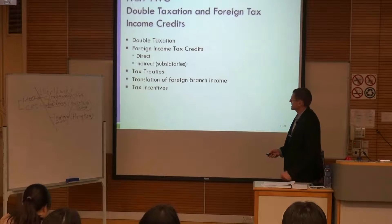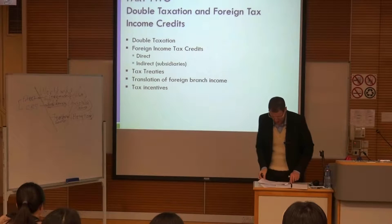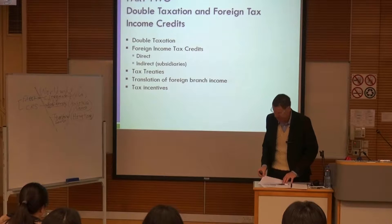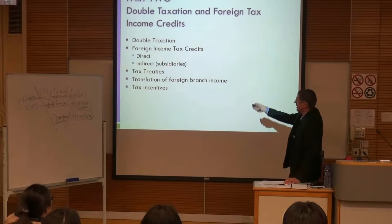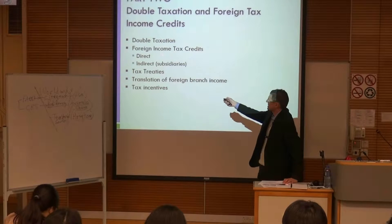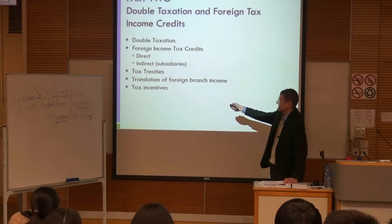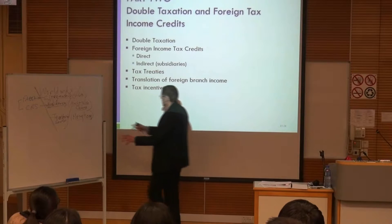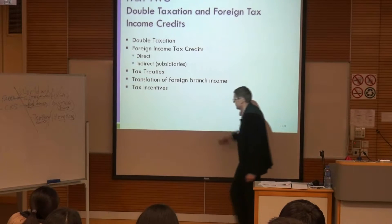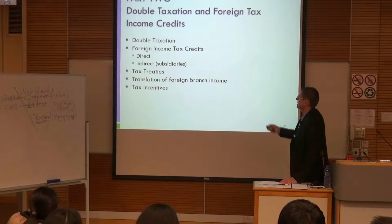Double taxation, tax treaties, and translation of foreign branch income — these are the topics we want to cover today, along with tax incentives and the foreign tax credit. We want to spend the most time on double taxation, foreign tax credits, and tax treaties. Translation of income and taxing scenes we won't spend as much time on.